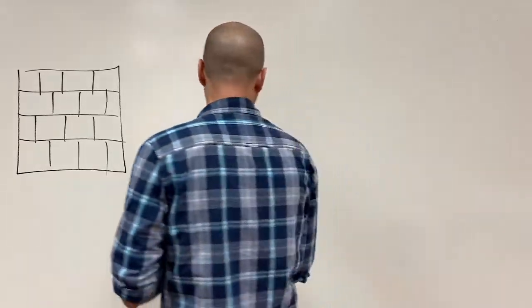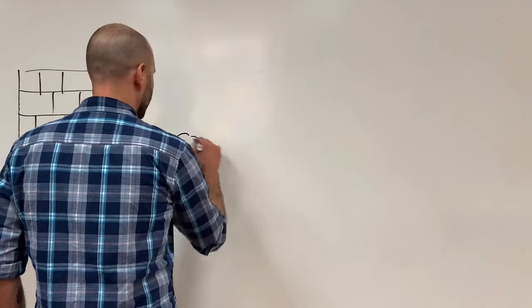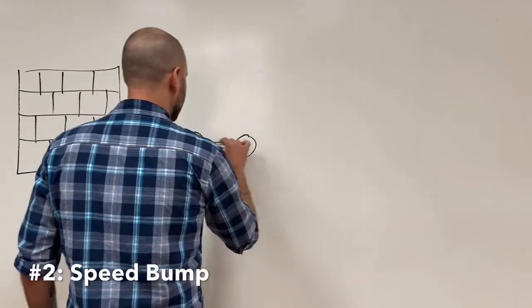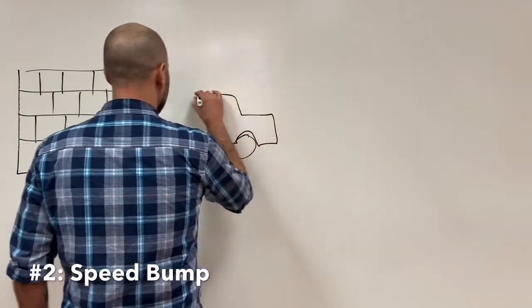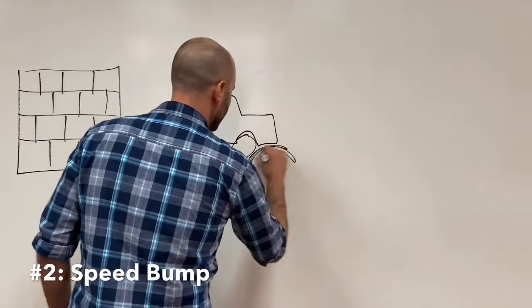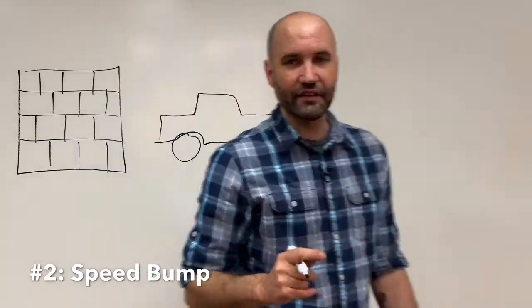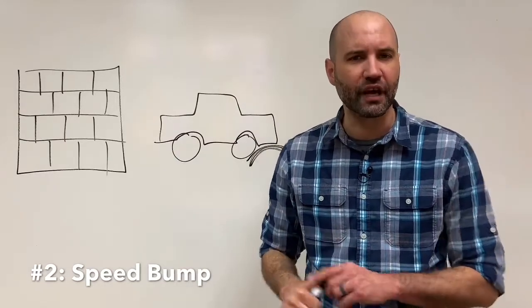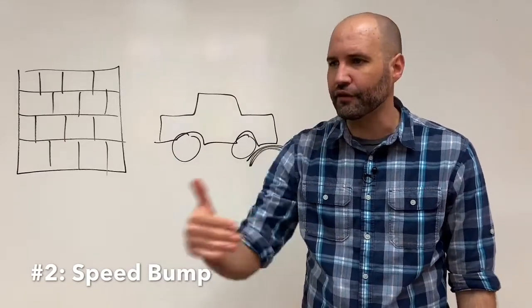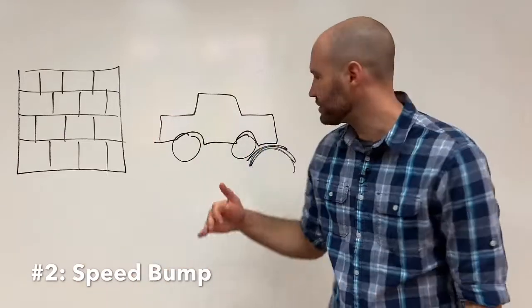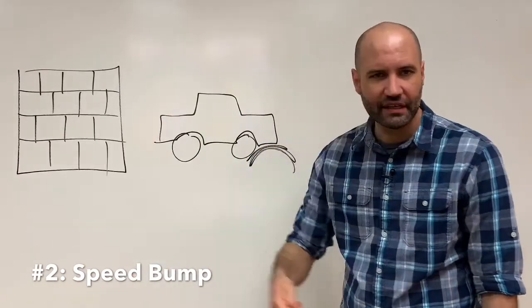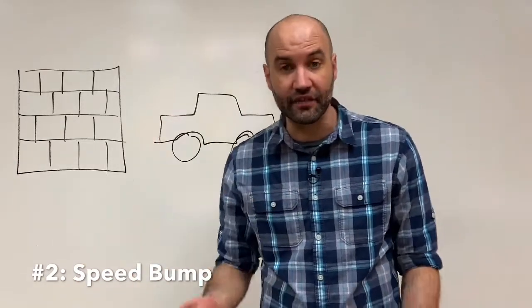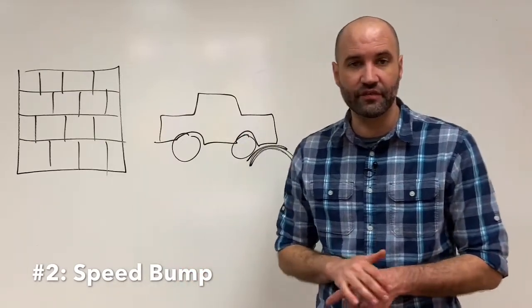The second is something we call a speed bump. And right, this is my real sad attempt at drawing a car, but it's a speed bump. It's one of those moments in life that seems to happen repeatedly. It's like if you can think about driving through a neighborhood and every 50 yards there's a speed bump. It's one of those things that just repeatedly happens in life that gets your attention, that causes some discomfort.